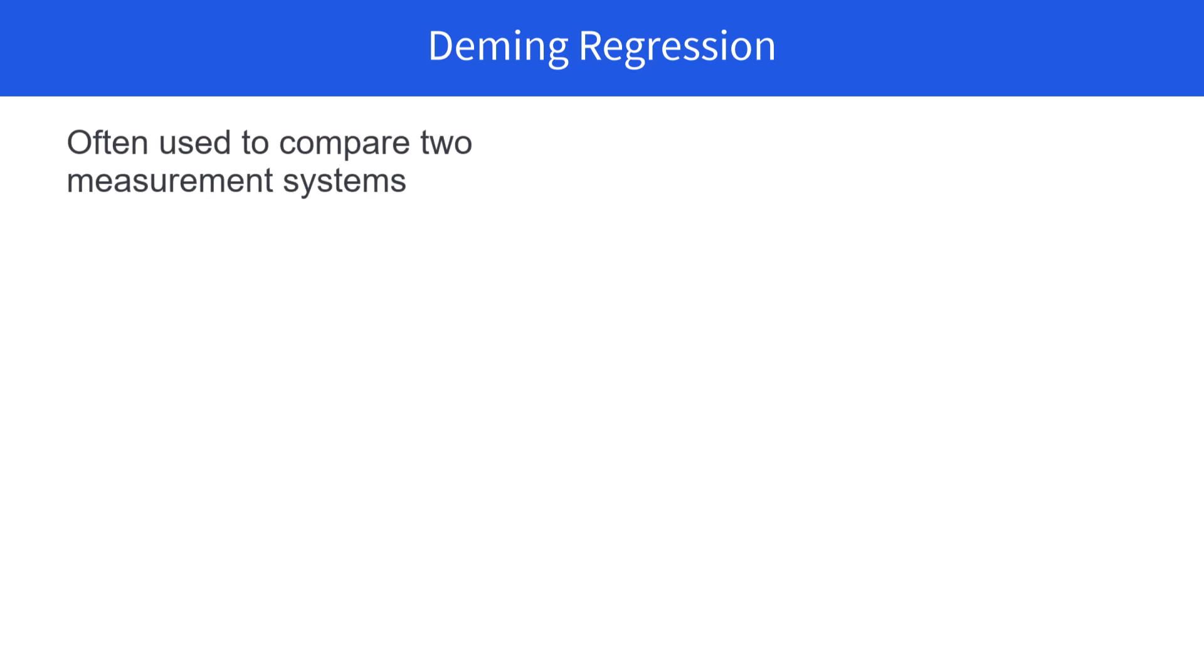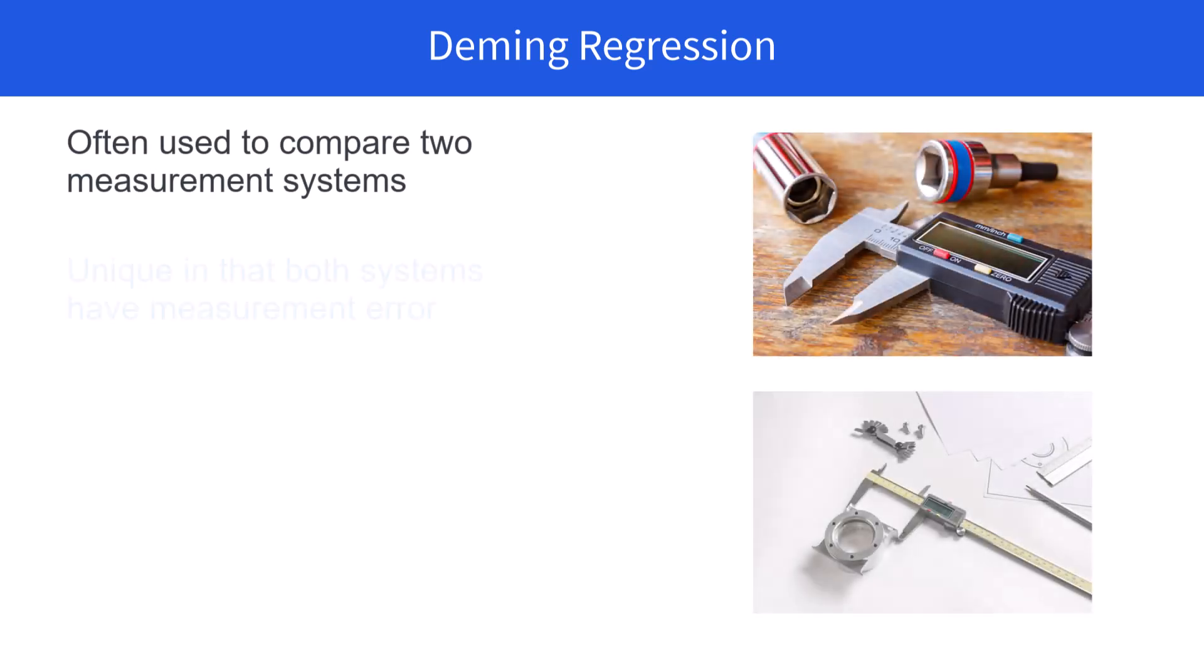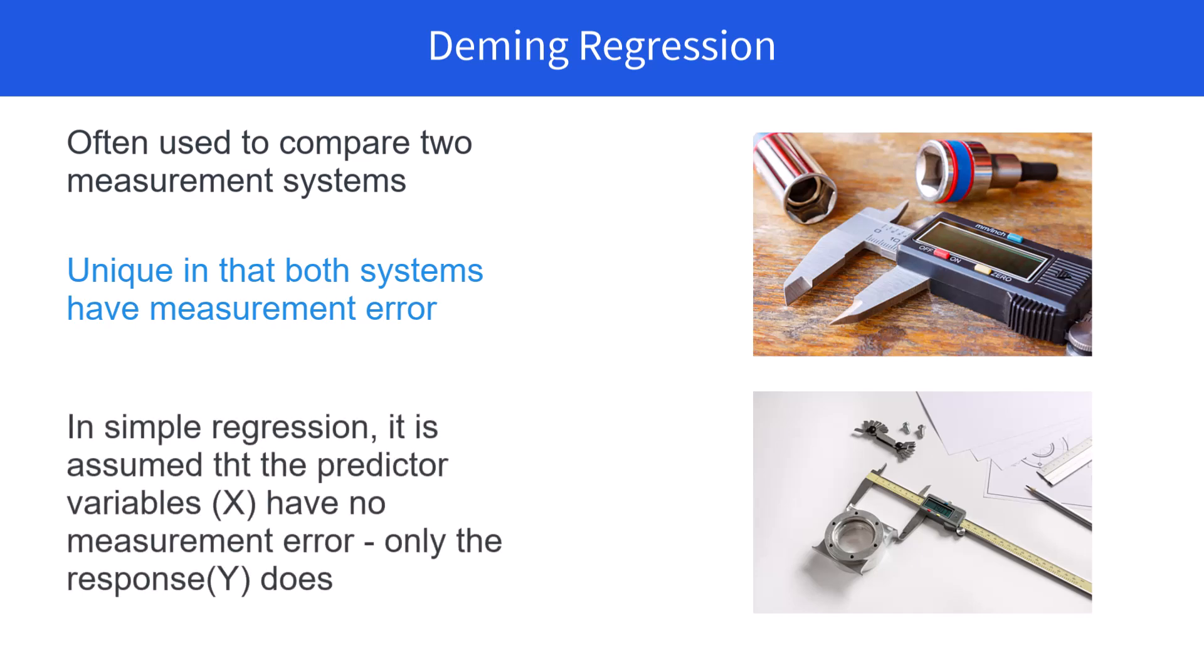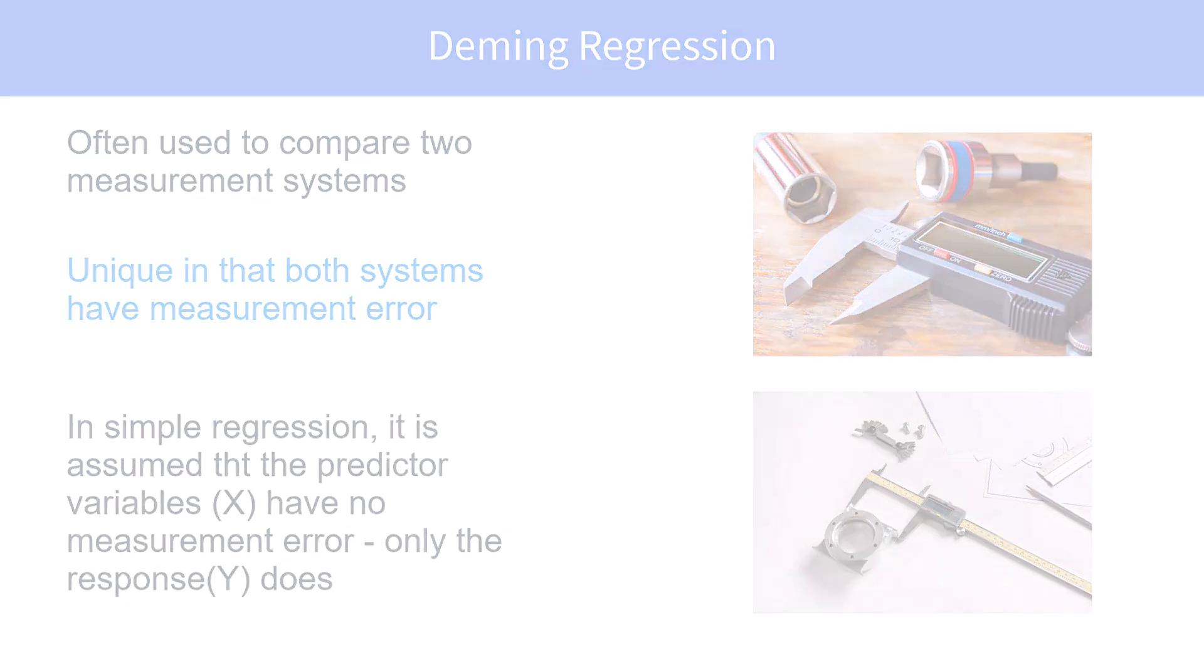Deming regression is often used to compare two measurement systems. It's unique in that both those measurement systems have measurement error, whereas in simple regression, typically only the Y response does.